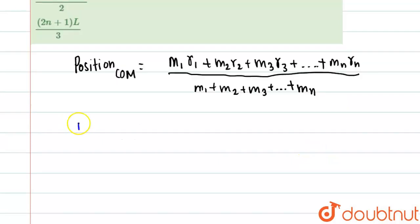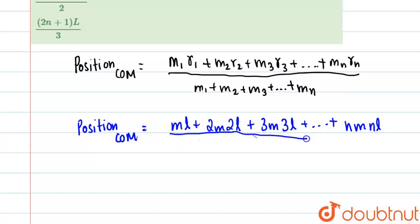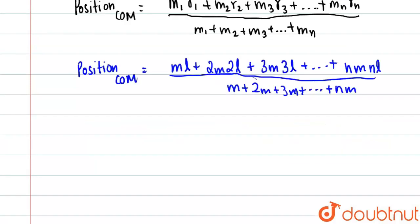The position of center of mass works out to be: m·l + 2m·2l + 3m·3l + ... + nm·nl, divided by m + 2m + 3m + ... + nm. This is the center of mass expression we need to simplify.